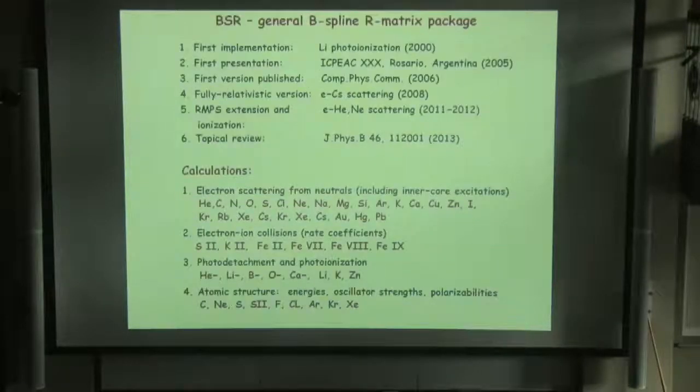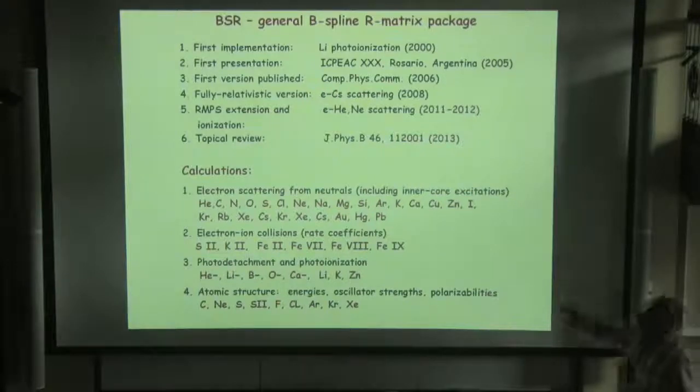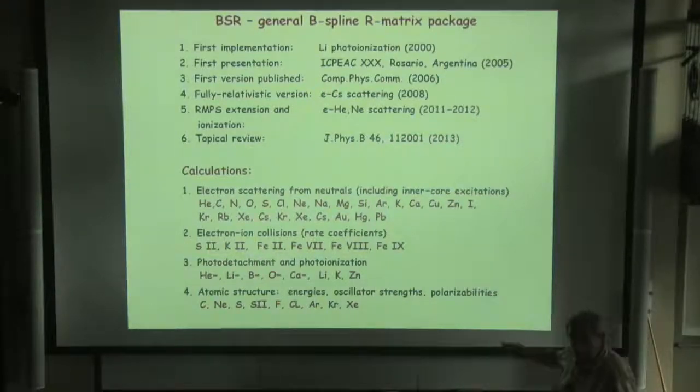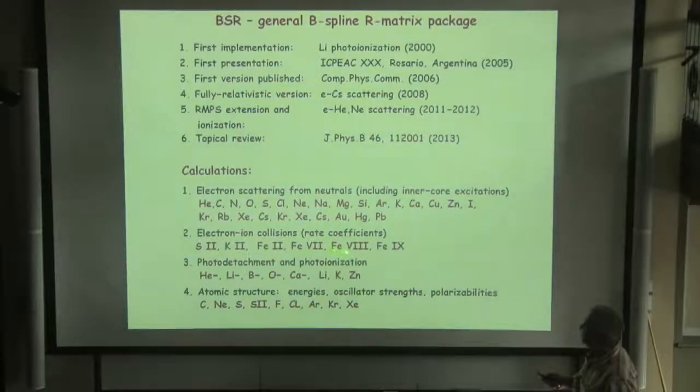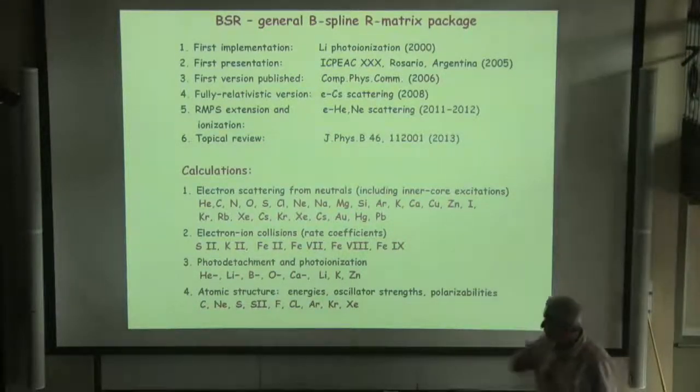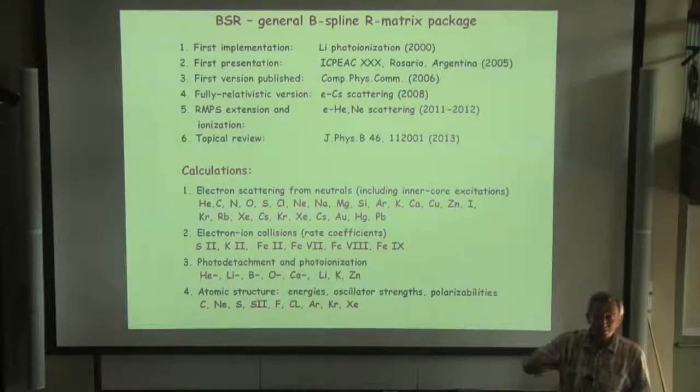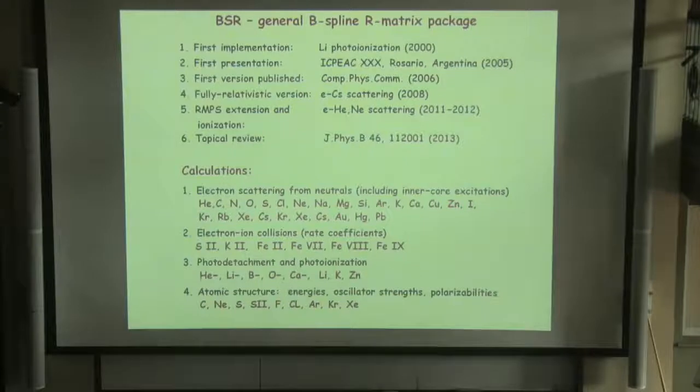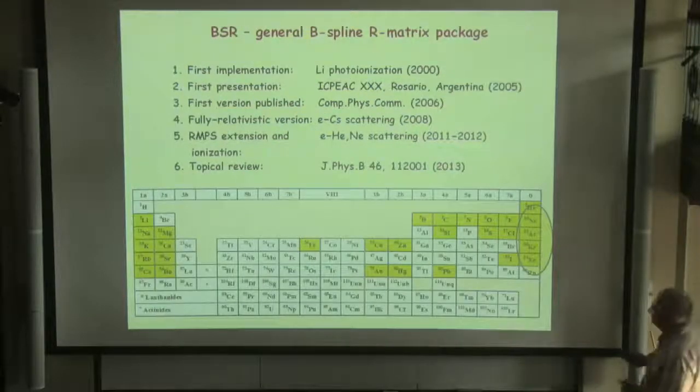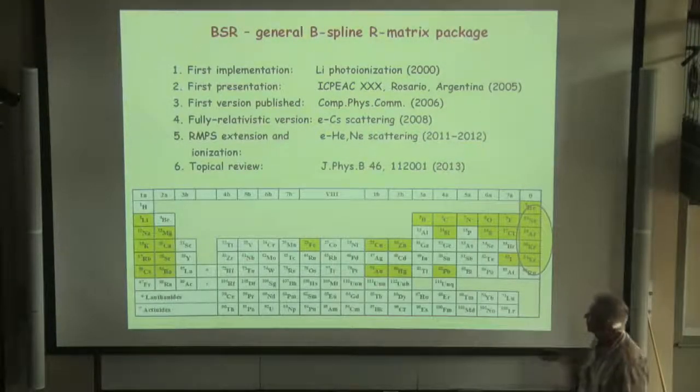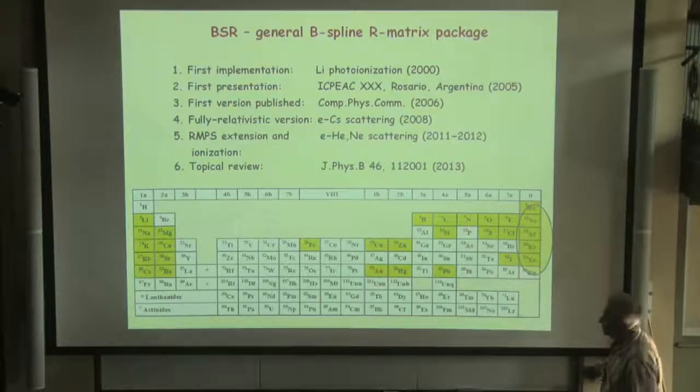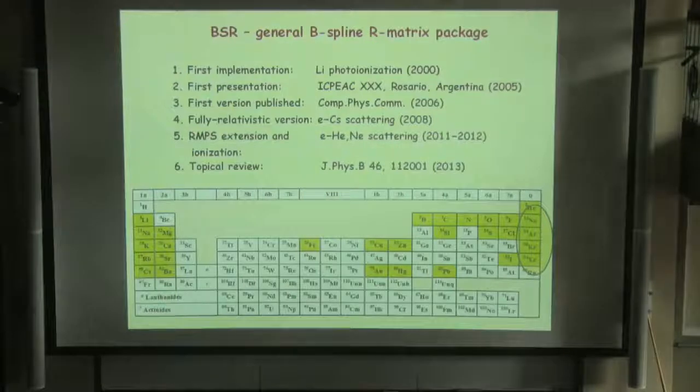Here is just a list of progress of our code and what excitation processes we considered. We consider many calculations on neutrals, but we also have some calculations for excitation on ions, and the photoionization and attachment calculations are very important. Also, it can be used for atomic structure calculation, if parameters needed for hollows are series, for example. Here I put already what atoms in yellow we consider, and just for illustration, take the excitation on the noble gases.